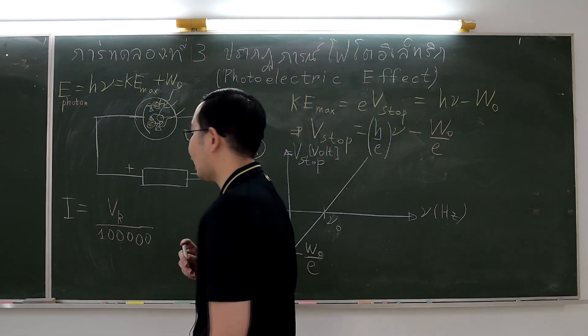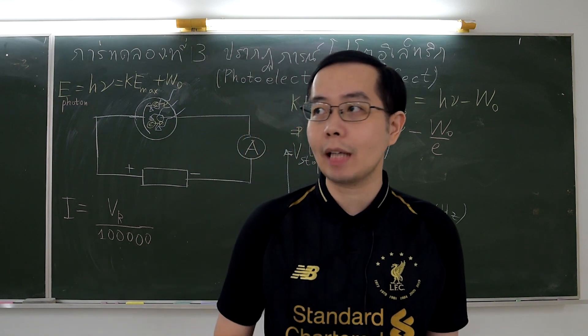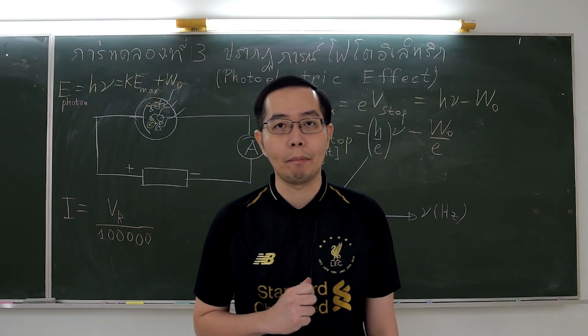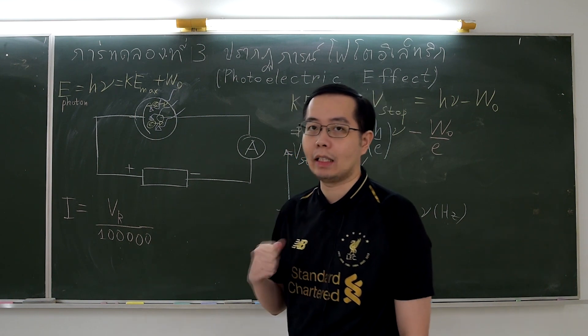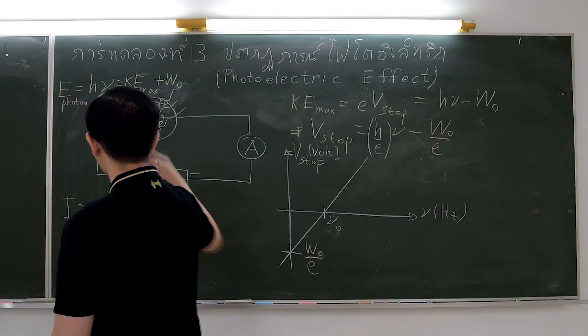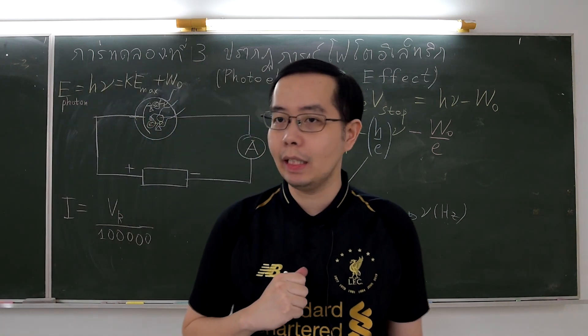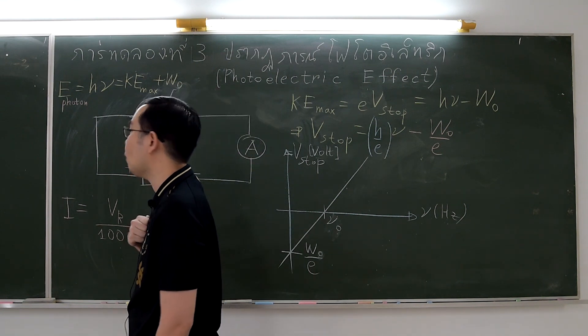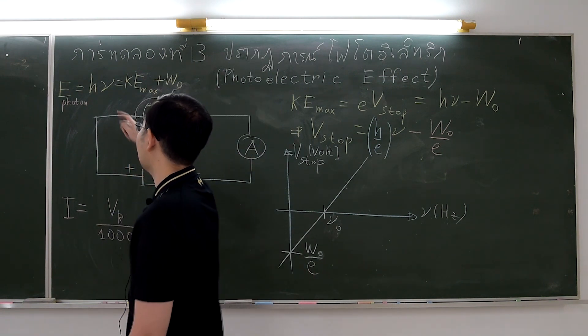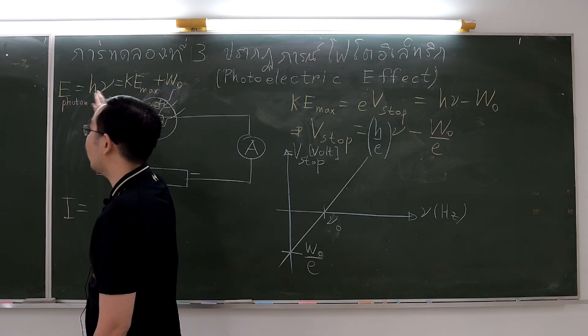In 1900, Max Planck studied black body radiation. He found that light is not a continuous quantity, but is a discrete quantity or quanta. The energy of light quanta is proportional to the frequency of light and does not depend on the amplitude of wave. The energy of light also depends on the constant H, called Planck's constant.